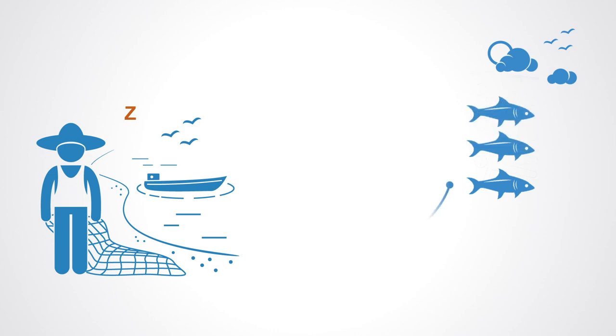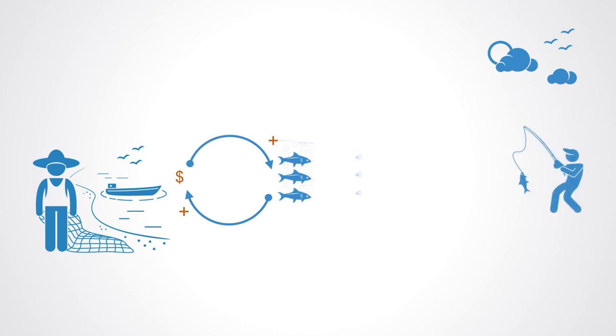The more fish Company Z catches, the more profits they generate, and the more they will increase their fishing, as profits allow the company to hire more fishermen and buy more fishing boats. This principle is the same for Company Y, and together both companies make up the total fishing.